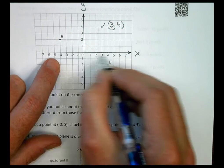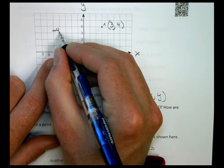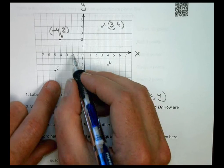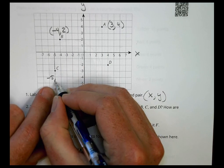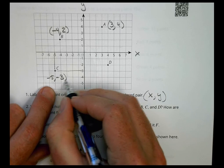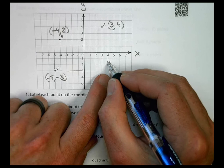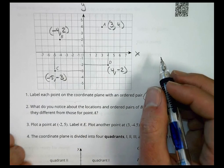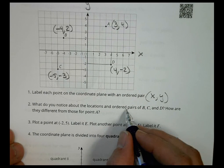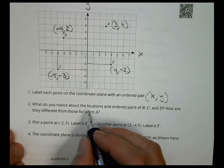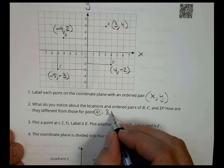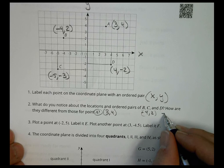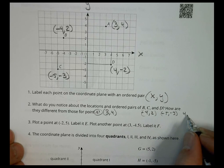When I look at B, the x value is on this line again, it's at negative 4 and the y value is here at positive 2. For C, the x value is negative 5 and the y value is negative 3. And for D, my x value is at 4 and my y value is at negative 2. What do you notice about the locations and ordered pairs of B, C, and D, and how are they different from point A? Point A is at 3, 4, but B, C, and D are negative 4, 2; negative 5, negative 3; and 4, negative 2.